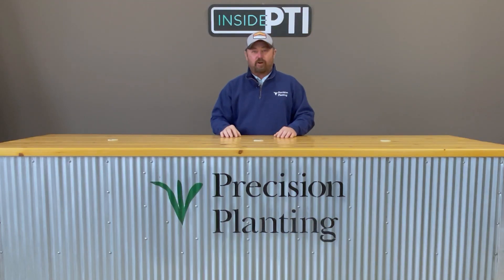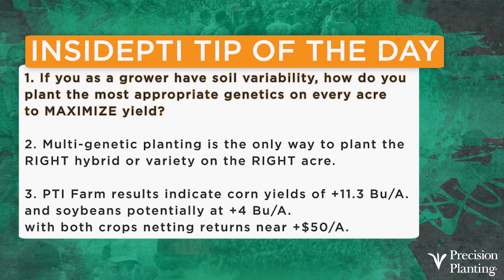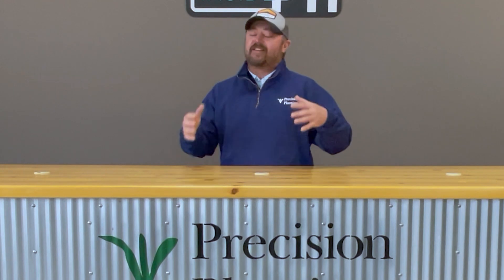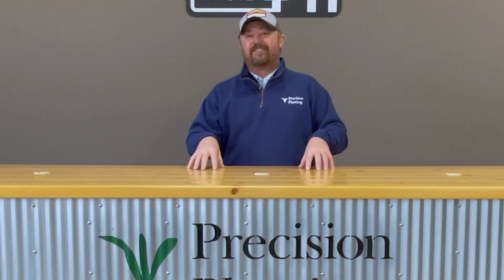Today's Inside PTI agronomy tip of the day: if you as a grower have soil variability on your farms, how do you plant the most appropriate genetics on every acre to maximize yield? Multi-genetic planting is the only way to plant the right hybrid or variety on the right acre. Our PTI farm results indicate corn yield gains of 11.3 bushels per acre and soybeans of up to four bushels per acre, with both crops netting returns near $50 an acre. What can you do to make an extra $50 on your farm? I'm talking about farming smarter — if you have soil variability, this is a way to farm smarter and plant the right genetics on the right acre.